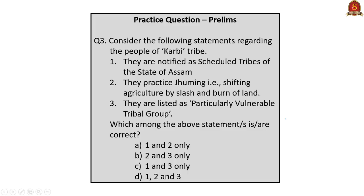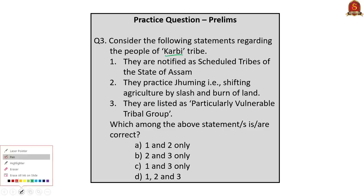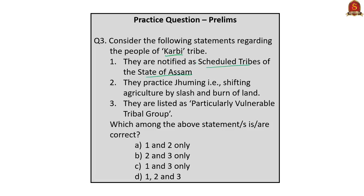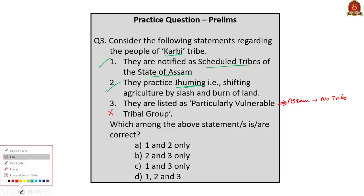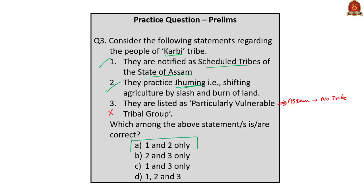Question 3 considers statements about the Kharbi tribe: Statement 1 — they are notified as scheduled tribes of Assam; Statement 2 — they practice Jhum, i.e., shifting agriculture by slash and burn; Statement 3 — they are listed as a Particularly Vulnerable Tribal Group. Statement 1 is correct. Statement 2 is also correct. Statement 3 is wrong — no tribe from Assam is listed in the PVTG. The correct option is A: 1 and 2 only.